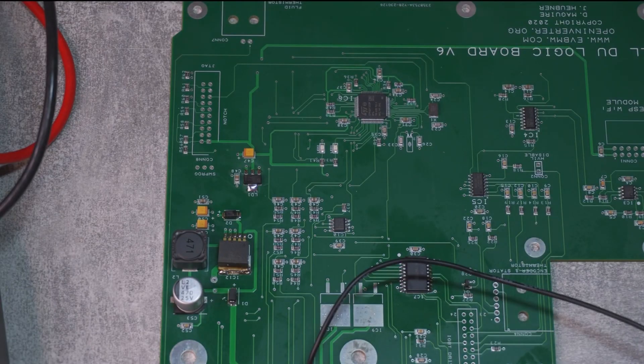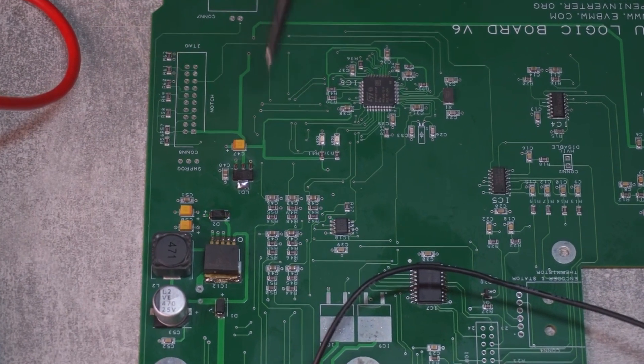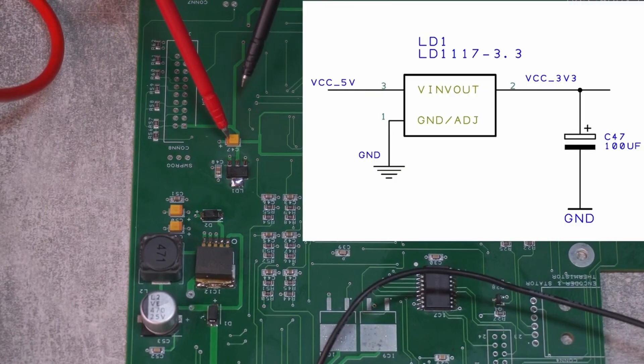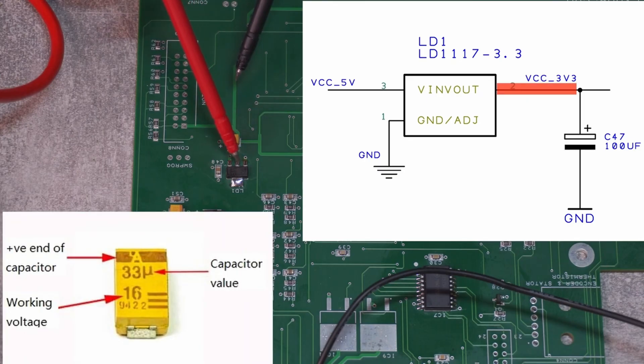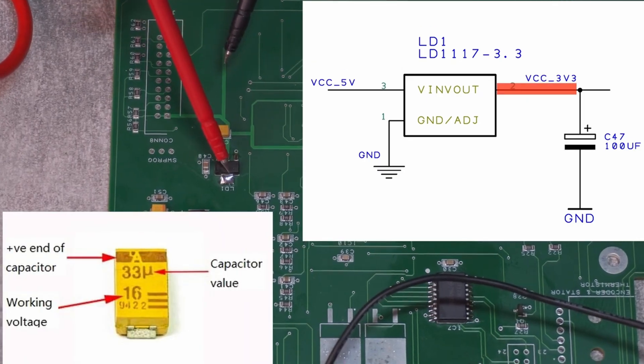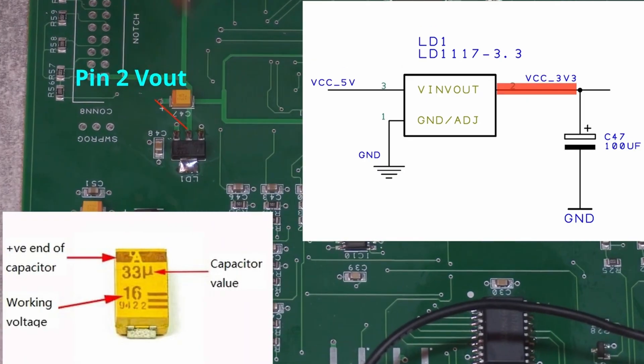At this point I noticed that my 3.3V supply was drifting while the 5V supply was very stable. Right, I think I found another mistake. The 3.3V is dropping because this marked side of the tantalum capacitor should be plus and it should be connected to pin 2 of the regulator here. It's 3.3V. Wow, I'm beginning to think that this Tesla build is cursed but in this case I'm enjoying solving these little problems and moving on to the next one.